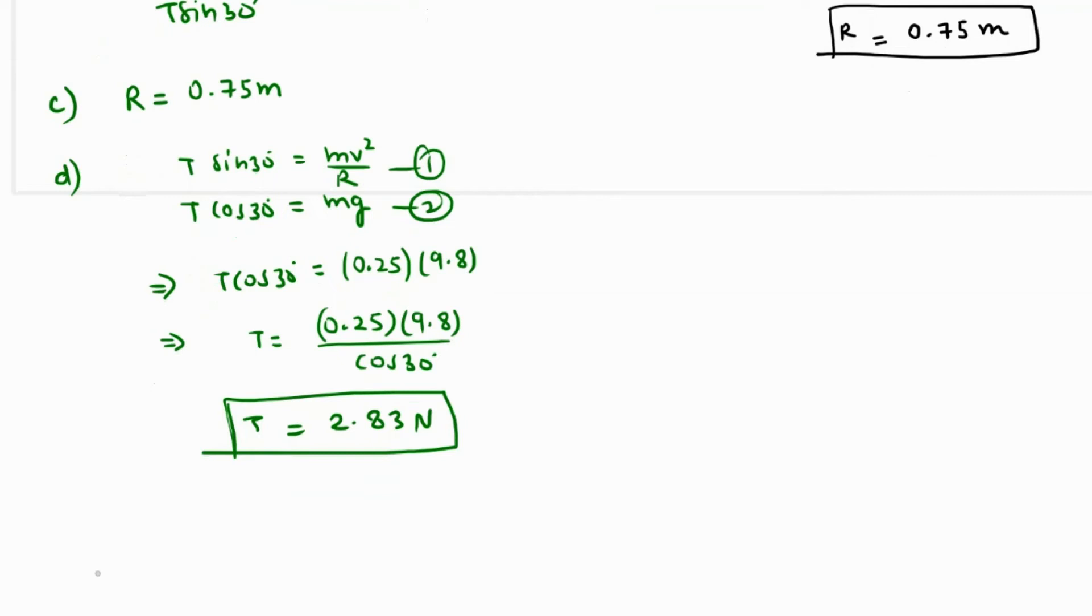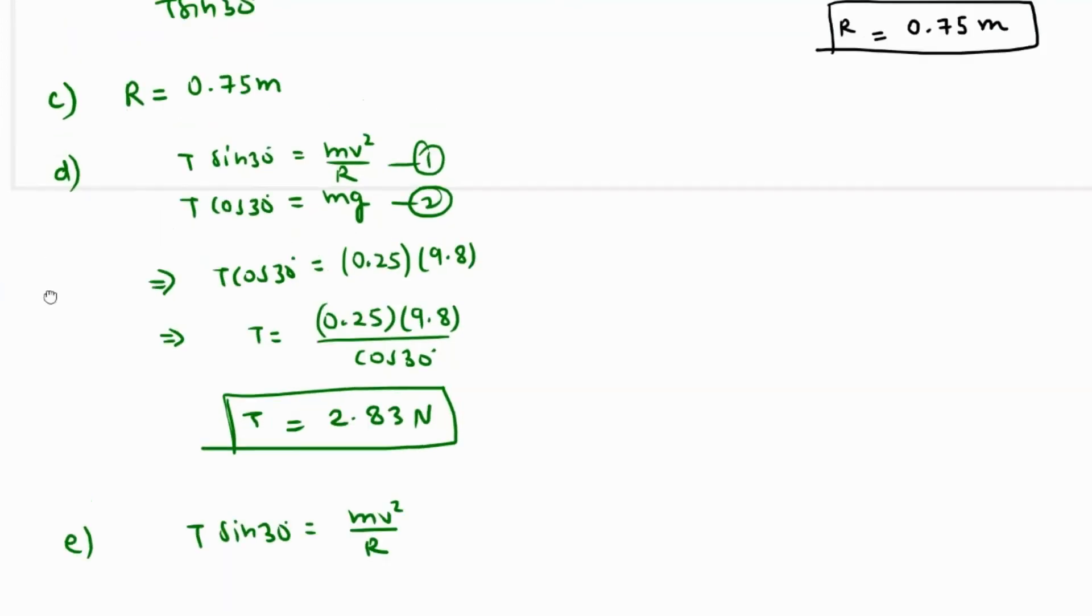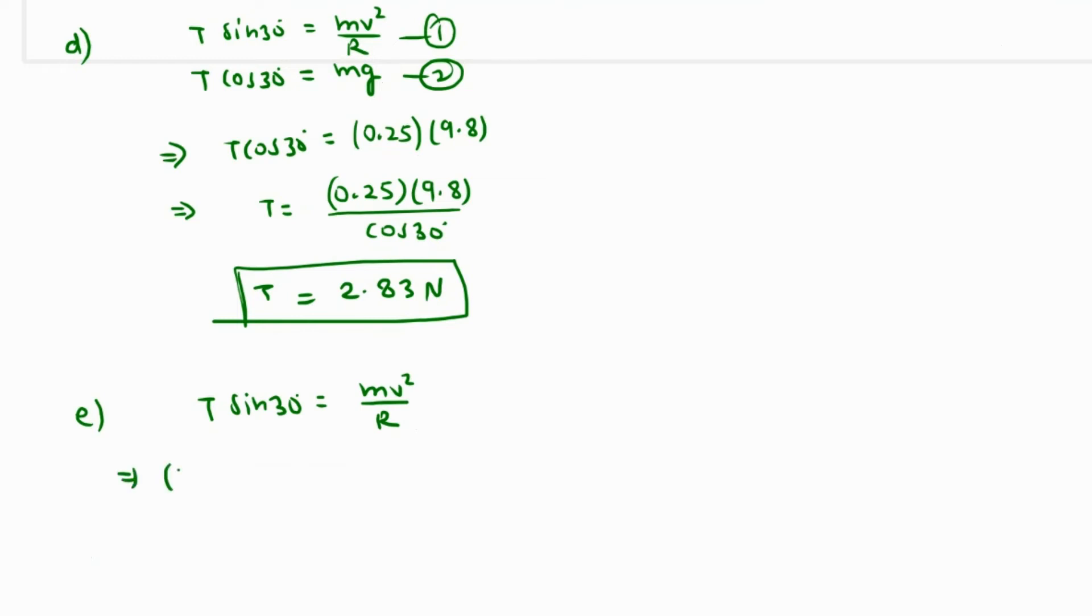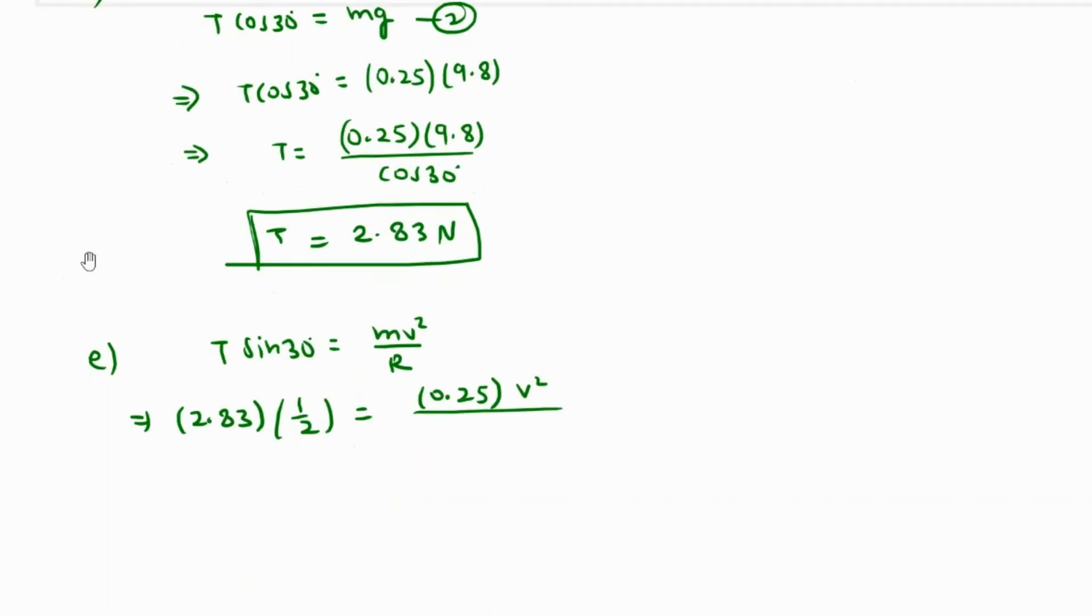Now we need to find the value of velocity using equation one. T sine 30 degrees is mv squared over R. What is T? We found it is 2.83. Sine 30 is 1 over 2, mass is 0.25 kilograms, velocity is unknown so that's v squared, and the radius is 0.75.